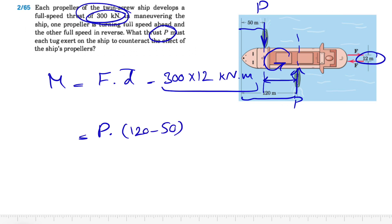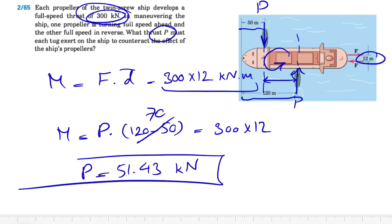And this has to be equal to the M that we found in the previous step, so this will be equal to 300 times 12. This will be 70, and from here we can find our P which will be 51.43 kilonewtons. So that's one way to solve this. Basically the couple produced by these two has to be equal to these two, obviously in the opposite direction, in order to cancel out each other.